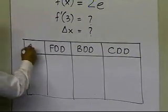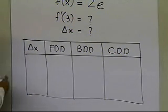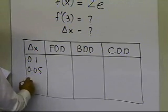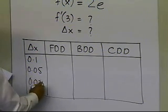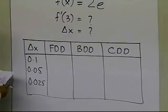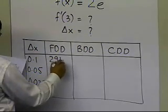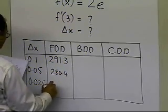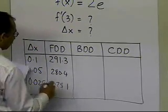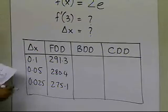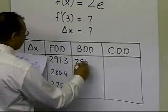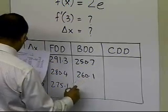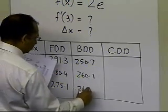I'm going to take different delta x values. If I choose delta x equal to 0.1, 0.05, and 0.025, the forward divided difference numbers I get are 291.3, 280.4, and 275.1. The backward divided difference numbers I get are 250.7, 260.1, and 265.0.